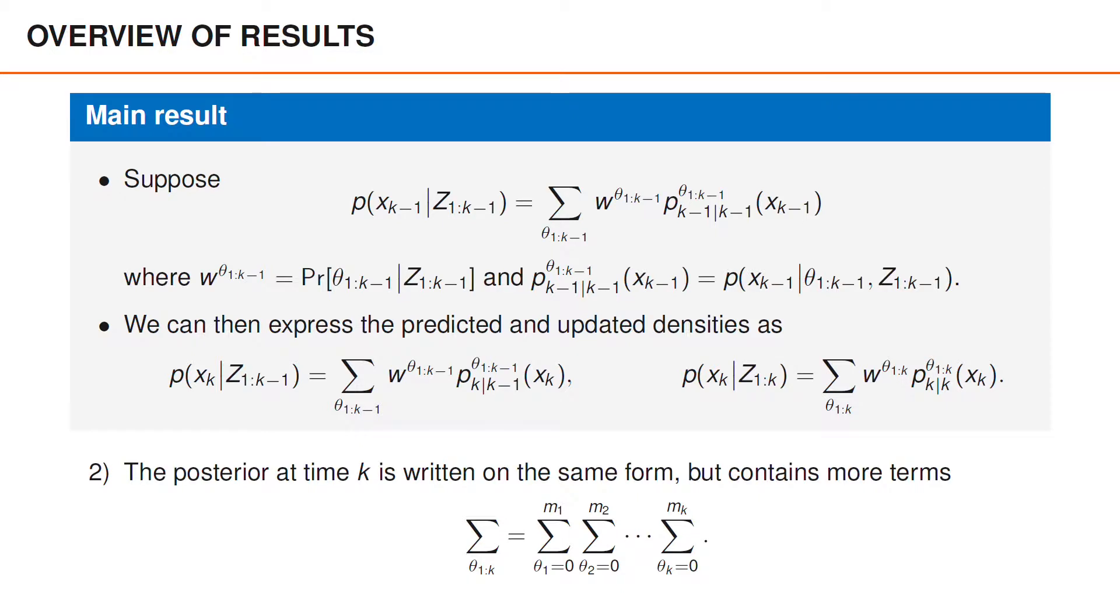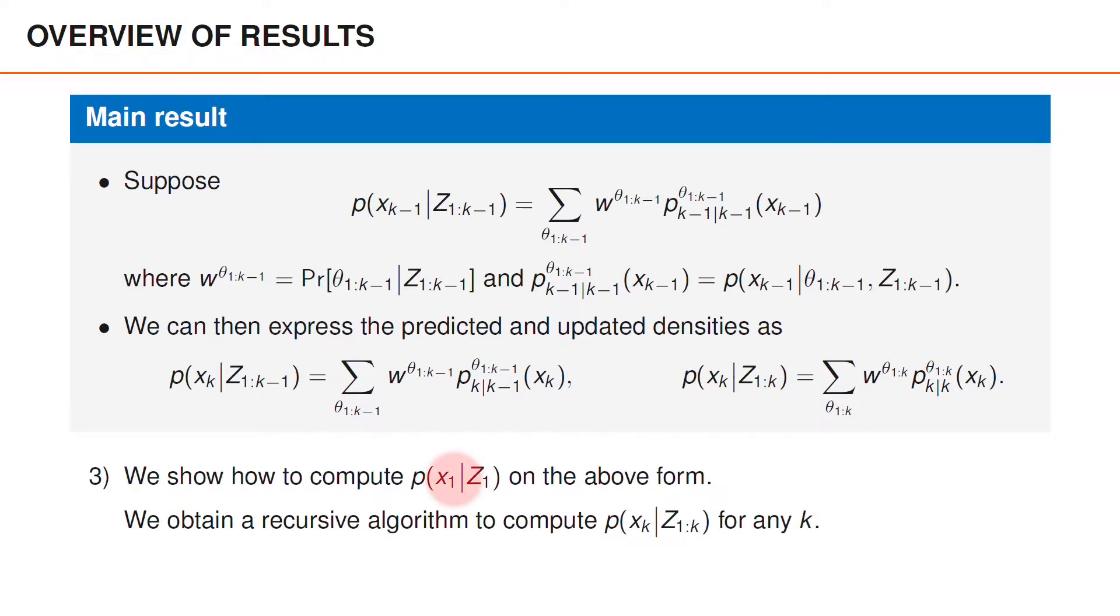Even though the posterior at time k is on the same form, the summation is over all possible data association sequences up to time k, and it therefore generally contains more terms. We know how to compute the posterior density at time 1 on the above form. With the above results, we therefore obtain a recursive algorithm to exactly compute the predicted density and the posterior at any time k.